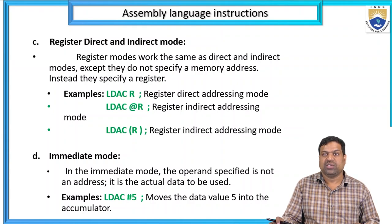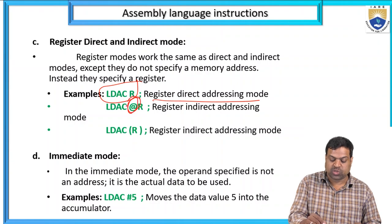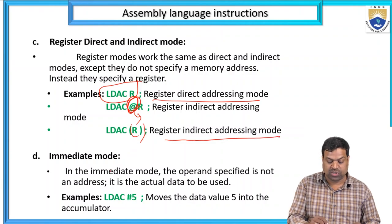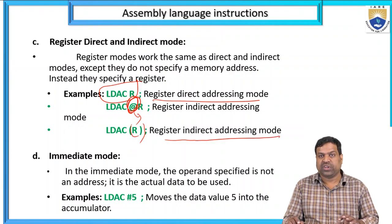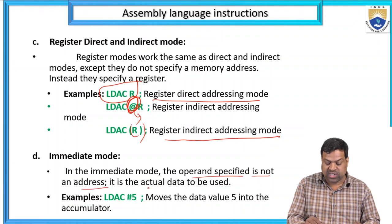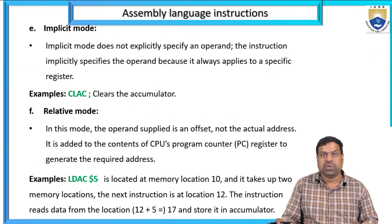Register direct and indirect mode: register modes work the same as direct and indirect modes except they specify a register rather than a memory address. Example: LDS C — register direct; with a special character it is indirect mode. Immediate mode: the operand specified is not an address but the actual data to be used. Example: LDS C, #5 — moves the data value 5 into the accumulator.